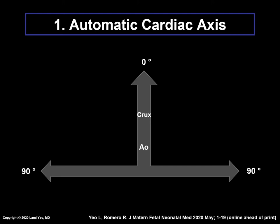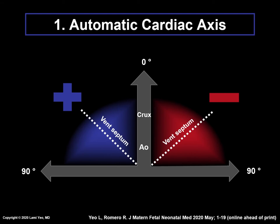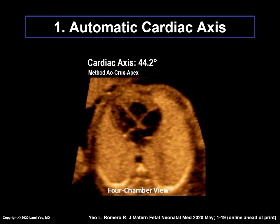If the ventricular septum is located to the left of the line drawn internally between the crux and cross-section of the aorta, the cardiac axis angle will be positive. However, if the ventricular septum is located to the right of this line, the cardiac axis angle will be negative. In summary, after the marking of seven anatomical structures is completed and the nine diagnostic planes are generated, FINE will depict the cardiac axis automatically in the four-chamber view diagnostic plane. In this example, the axis is 44 degrees.